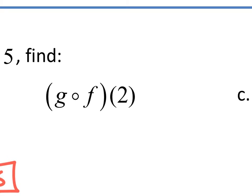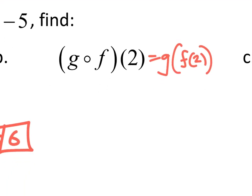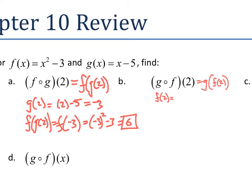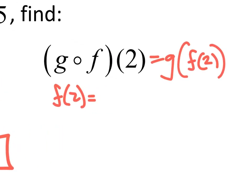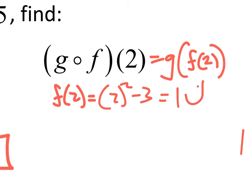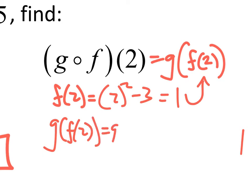Now g composed with f of 2. First step is to rewrite this as g of f of 2. This helps us see that f of 2 is inside of g. So the first thing we need to do is figure out what f of 2 is. We take our function x squared minus 3 and plug in 2. We get 2 squared minus 3, and that's 4 minus 3, which is 1.